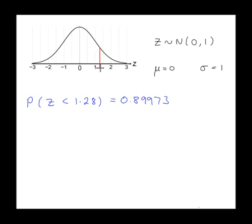And here's the line at 1.28. Which way is the arrow pointing? To the left. It says z less than, so shading to the left. So that probability there is about 90%. So 90% is approximately shaded there.